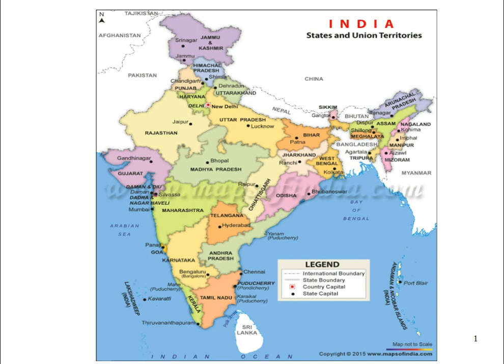Government is a group of people who decide how a country will function. India got its independence in 1947, and from then India is a democracy where the people elect their own government. People choose their own government, and the government decides how the country will function.